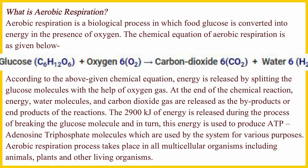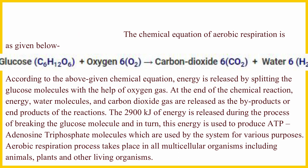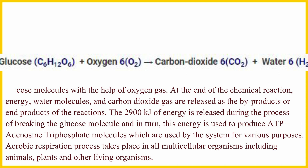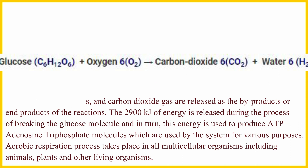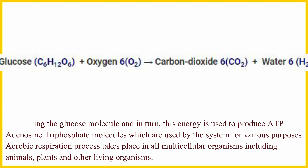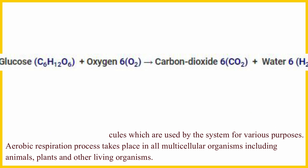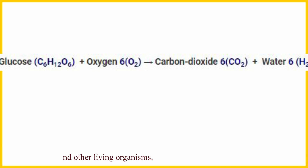The 2,900 kJ of energy is released during the process of breaking the glucose molecule. This energy is used to produce ATP — adenosine triphosphate — molecules, which are used by the system for various purposes. Aerobic respiration takes place in all multicellular organisms including animals, plants, and other living organisms.